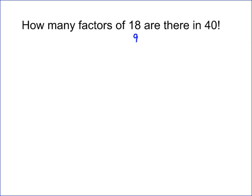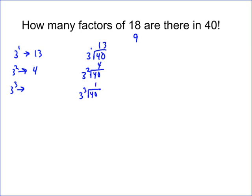We find the total number of 3's in 40 factorial: 3 to the first goes into 40 thirteen times; 3 squared is 9, and 9 goes into 40 four times (9×4=36); 3 to the third is 27, and 27 goes into 40 just once. Since 3 to the fourth is 81 and doesn't go into 40, the total number of 3's is 13+4+1 = 18.